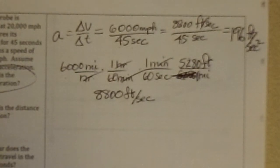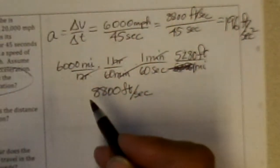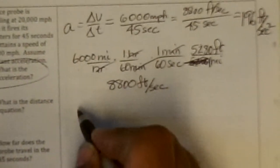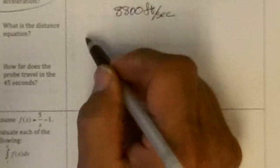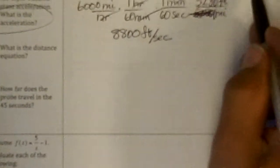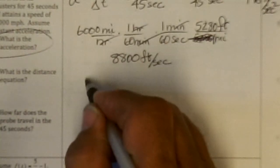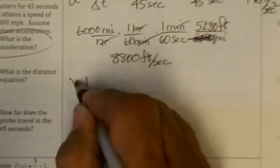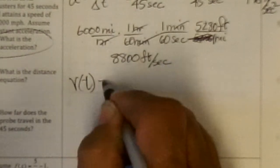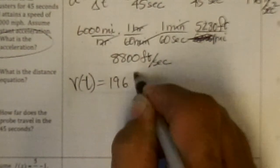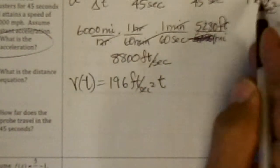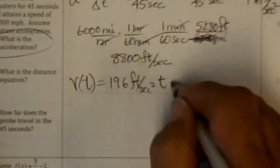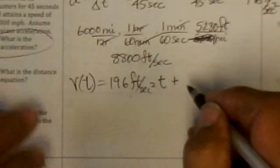What is the distance equation? So the distance equation would be, we'd find the velocity by integrating this, and that would be the velocity would be 196 feet per second squared t. Integrating that constant, plus a constant, which is the initial velocity.